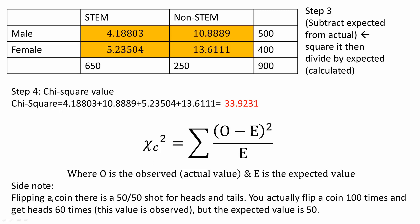As a side note on observed vs. expected: when you flip a coin there's a 50-50 shot for heads and tails. However, if I flip a coin 100 times, I may actually get 60 heads — that is the observed value. The expected value when flipping 100 times is 50 heads. That's what we mean by observed and expected.